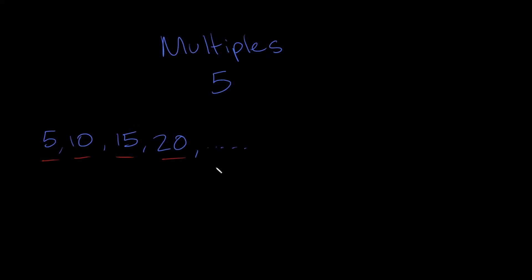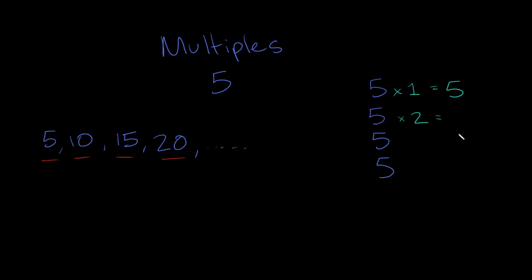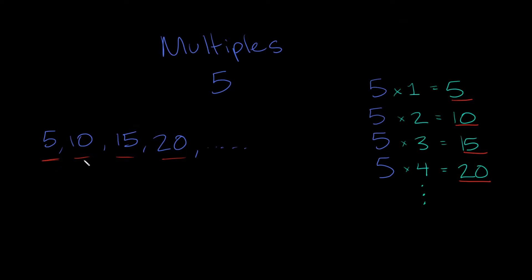Another way to find multiples of five is by taking five and multiplying it by a whole number. Let's start with one: five times one equals five. Five times two is ten. Five times three is fifteen. Five times four is twenty. And then we could just keep going — times five, times six, times seven, etc. All these answers are also multiples of five: 5, 10, 15, 20. Just two different ways of doing it.